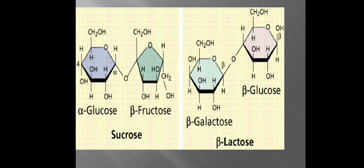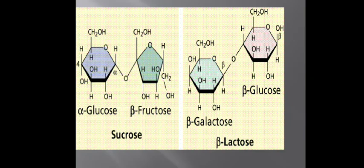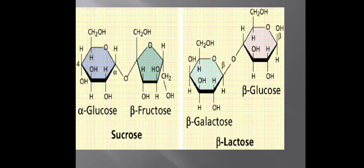As discussed earlier, the glucose molecule binds to the fructose molecule with the help of a glycosidic bond. This binding takes place at the alpha position of the first carbon of the glucose molecule to the second carbon of the fructose molecule at the beta position. So this linkage is known as the alpha-1 to beta-2 linkage.